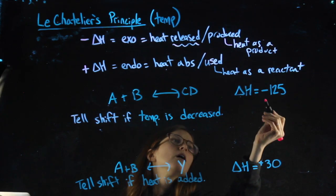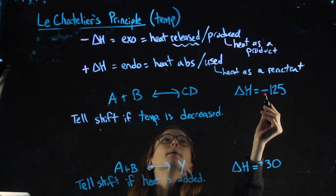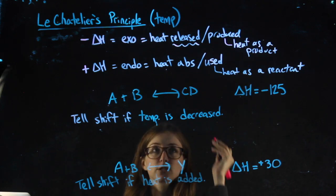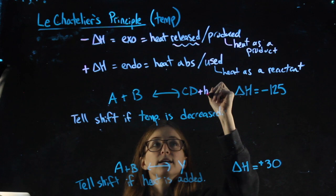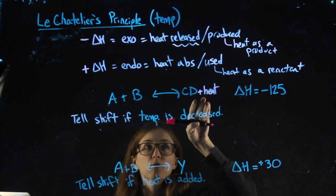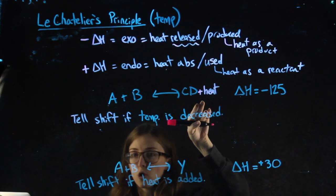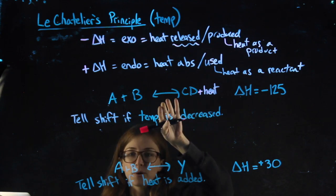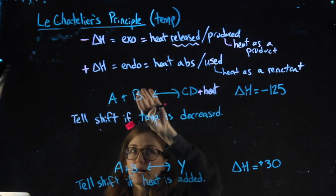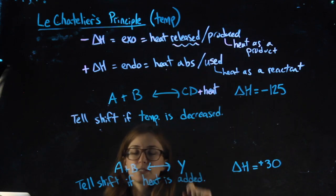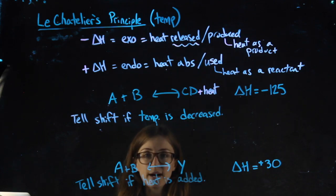For this example, negative sign means that we're going to treat heat as a product. So I'm going to literally write the word heat on the product side of my arrow. Products are always the right side. It doesn't matter that we're using equilibrium arrows. Still the reactants and the products. So negative means I treat heat like it's something on the right.